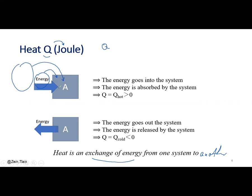As energy is added to the system, we call it Q-hat and it must be positive. When Q is negative, we say that the energy is gained or absorbed by the system. And if we release a quantity of energy out of the system, Q is called Q-cold, which must be negative, meaning the energy is released by the system.